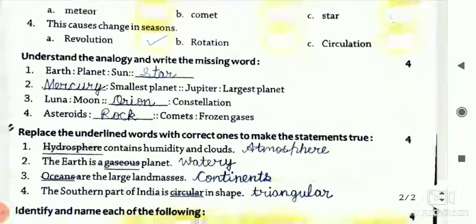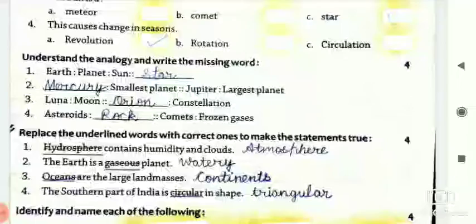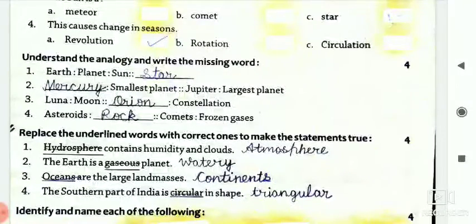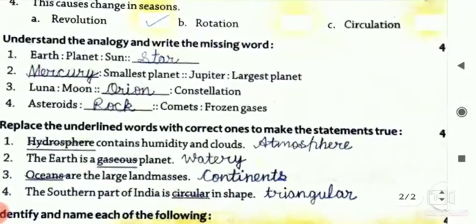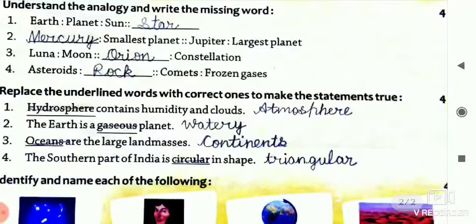Next question is, replace the underlined word with correct one to make the statement true. First one is, hydrosphere contains humidity and clouds. Look at here, the word hydrosphere is already underlined. So you have to change the word which was underlined. So we change the hydrosphere with the atmosphere. So your answer is, atmosphere contains humidity and clouds.